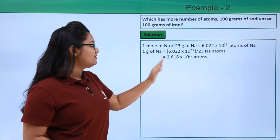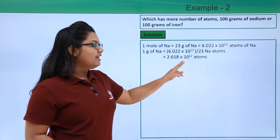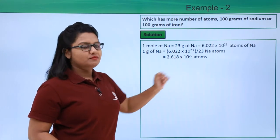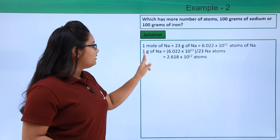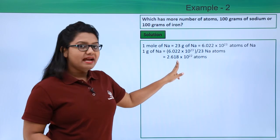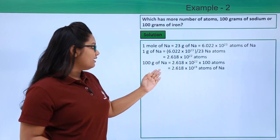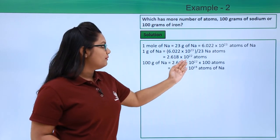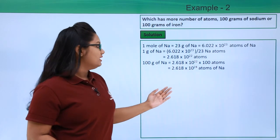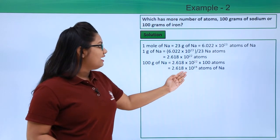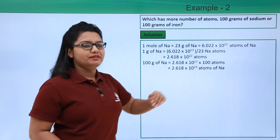This calculation yields 2.618 × 10^22 atoms of sodium. Since 1 gram of sodium has these many atoms, 100 grams of sodium must be having this number multiplied by 100, which is 2.618 × 10^24 atoms of sodium.